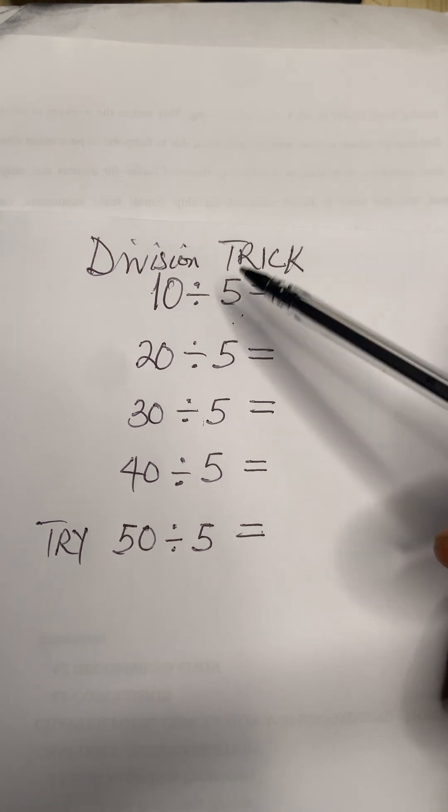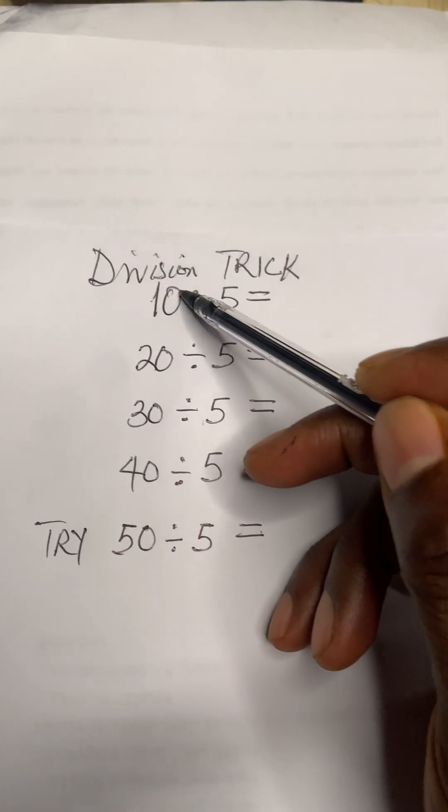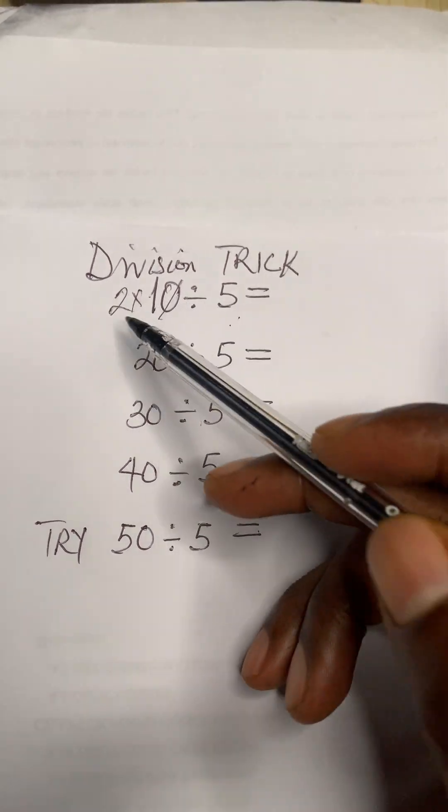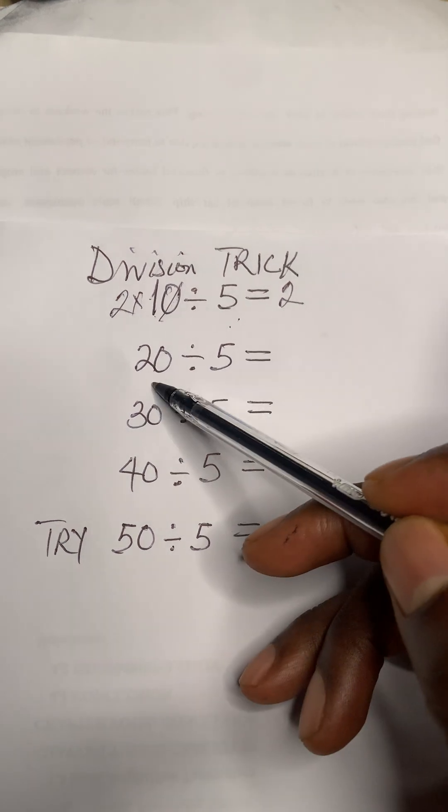Now I want to teach you. If they ask you 10 divided by 5, you know, no waiting. You won't use your hand to count. Just cancel this zero then multiply by two. Two times one will give you two, that's the answer.